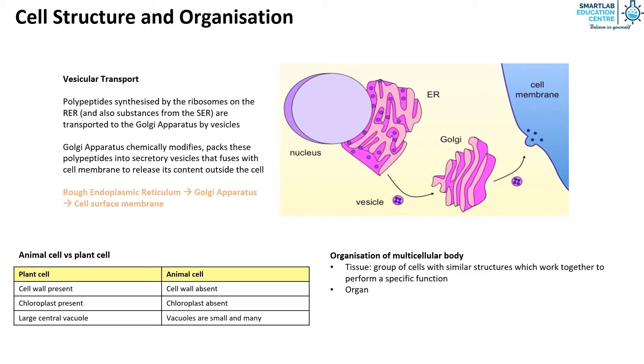An organ system consists of several organs working together for a common purpose. Finally, an organism is made up of many different organ systems working together.